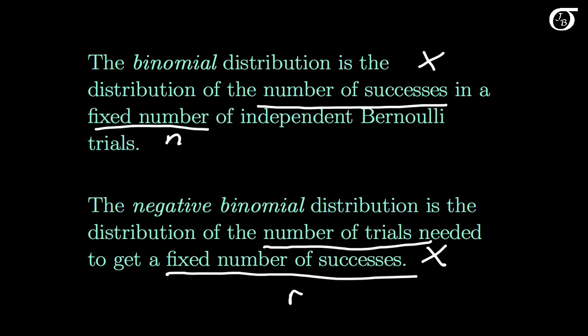The negative binomial distribution can be defined a little differently — for instance, sometimes it's described as the distribution of the number of failures needed to get that fixed number of successes — but we're going to use the definition here. What we're interested in is the probability distribution of the number of trials needed to get a fixed number of successes in repeated independent Bernoulli trials.